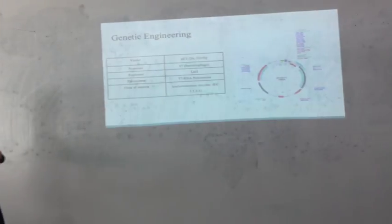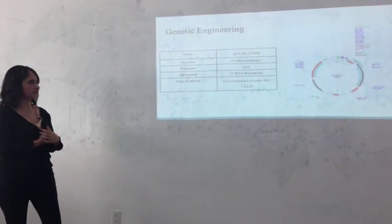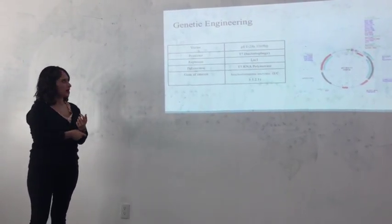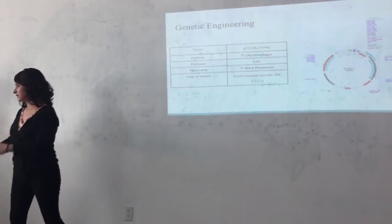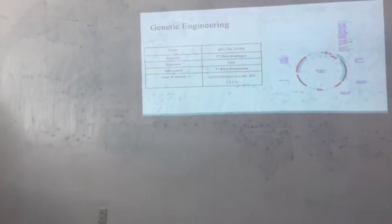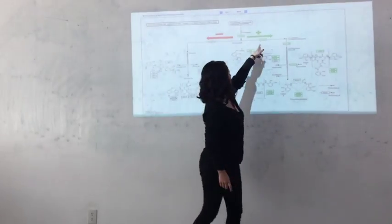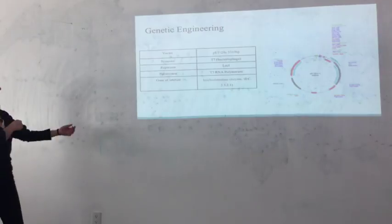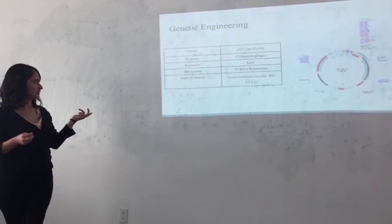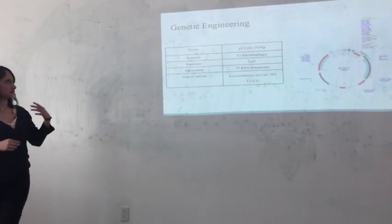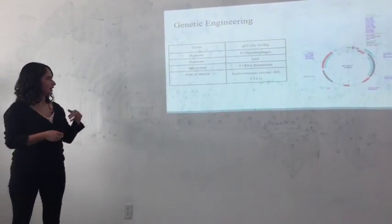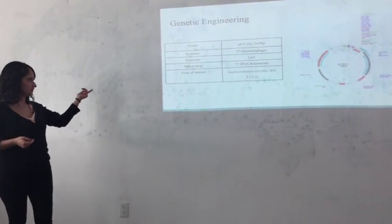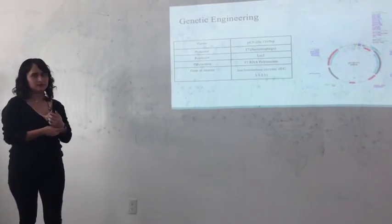To achieve the third strategy, which is to increase the amount of the enzyme, we are going to use genetic engineering. The enzyme that we want to increase is isochorismatase. We're going to use the pET-28a vector with a T7 promoter that is from a bacteriophage, lac repressor, T7 RNA polymerase, and of course the gene of EntC, which is the isochorismatase enzyme gene.